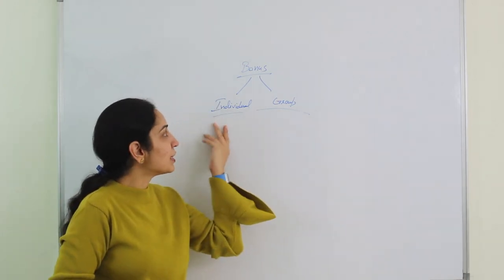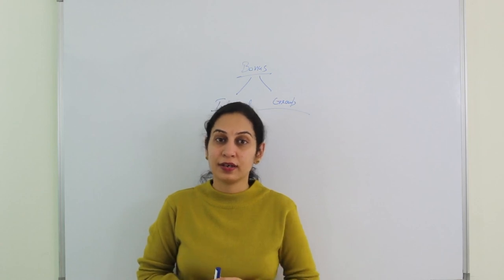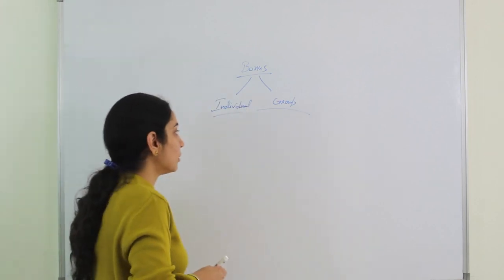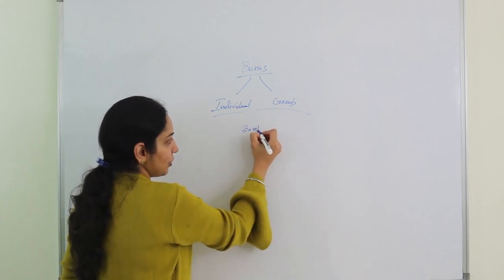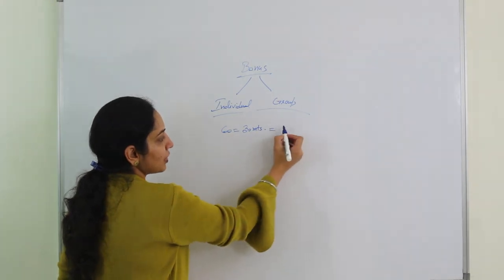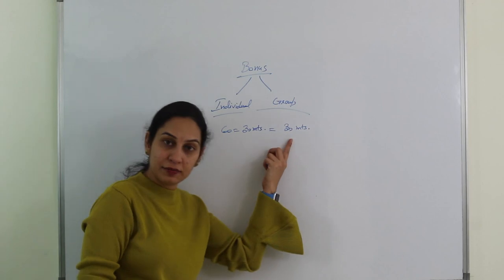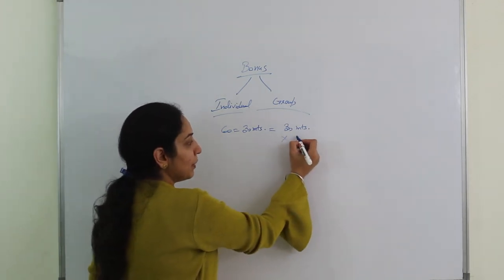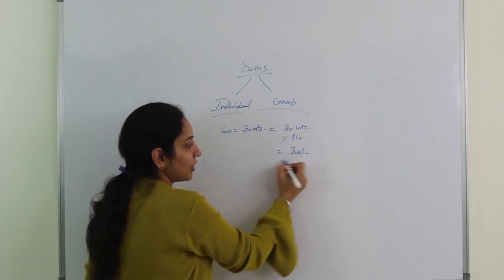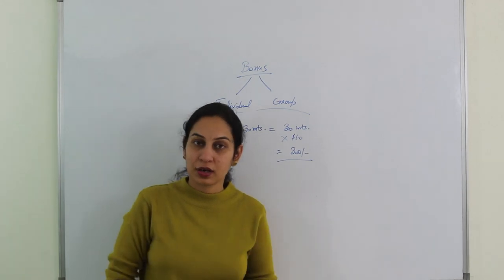Bonus is always given on time saved, over and above the day rate. For example, if a particular job was assigned 60 minutes but was completed in 30 minutes, the time saved is 30 minutes. This 30 minutes is multiplied by the labour rate — say $10 per hour — to calculate the bonus amount.